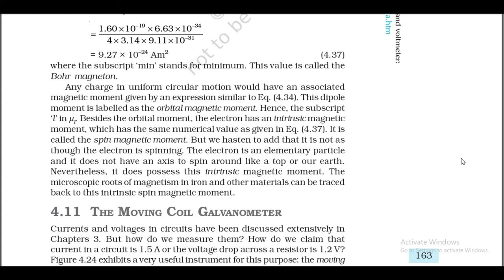Any charge in uniform circular motion has an associated magnetic moment given by an expression similar to equation 4.34 — this is labeled the orbital magnetic moment, hence the subscript l. Besides the orbital moment, the electron has an intrinsic magnetic moment with the same numerical value as the Bohr magneton, called the spin magnetic moment. However, it is not that the electron is literally spinning — the electron is an elementary particle and does not spin like a top. Nevertheless it possesses this intrinsic magnetic moment. The microscopic roots of magnetism in iron and other materials can be traced back to this intrinsic spin magnetic moment.